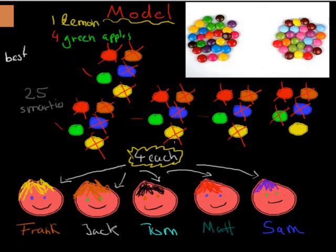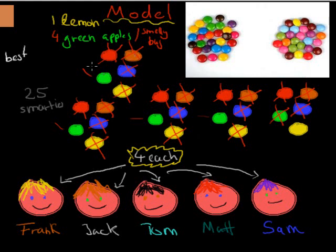How does that help us understand natural selection? Imagine these Smarties are not Smarties but bugs — insects — and these five kids are not kids but birds. The only difference between these insects might be the way they smell. You might have four that smell normal, and the green apple ones are the smelly bugs. If those birds choose which one they want to eat, they would obviously eat all the ones that smell normal first, and eat the smelly bugs last because they don't want to eat a smelly bug if they can eat a different one instead. The same as the boys choosing their favourites — green apple was not their favourite flavour, so the green apples are left over.